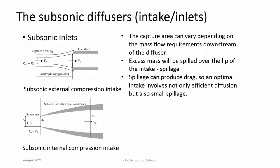Looking at subsonic diffusers — typical examples are intakes. What intakes do is capture mass from the surrounding air and push it towards the engine, whether it is a gas turbine engine, or at high speeds a ramjet or scramjet engine. The required amount of mass flow for the engine is provided by the intake by appropriately capturing the mass, reducing the velocity, and increasing pressure.